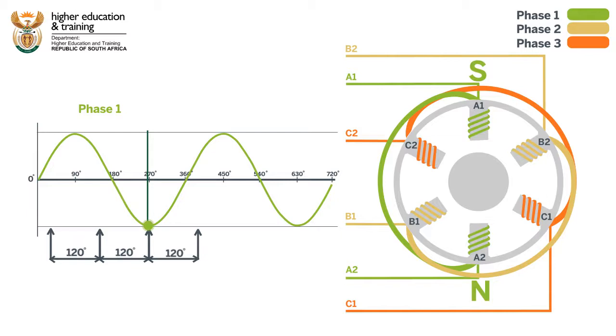Again, a magnetic field is formed on the poles, but this time in the reverse direction. A north pole forms on A2 and a south pole forms on A1.